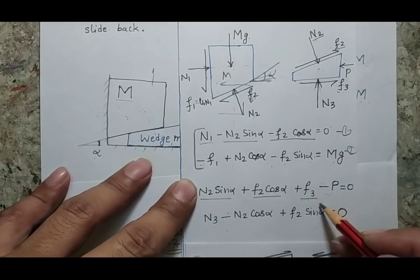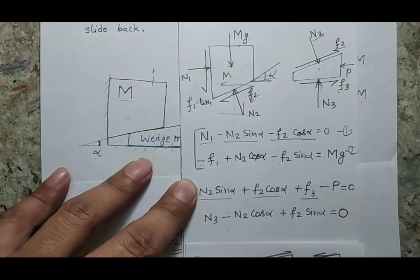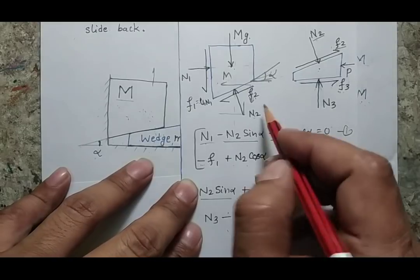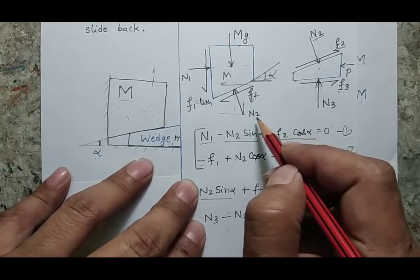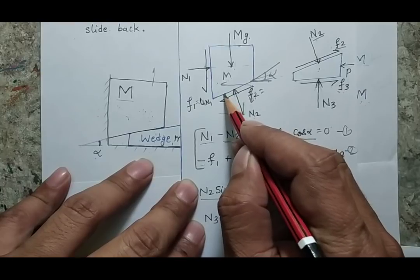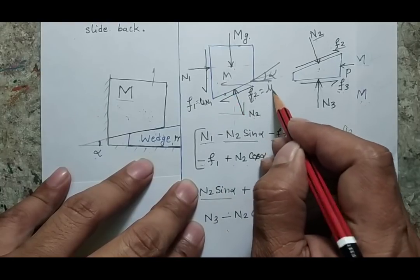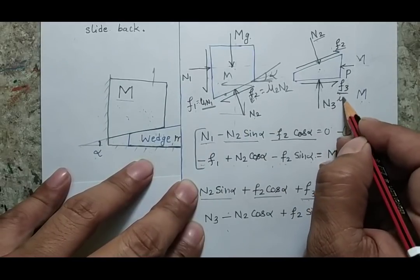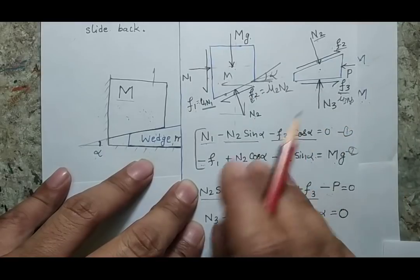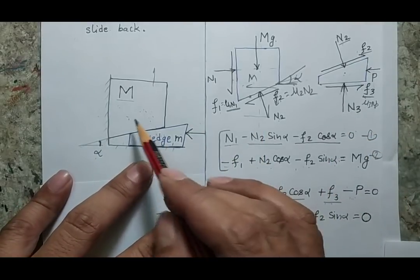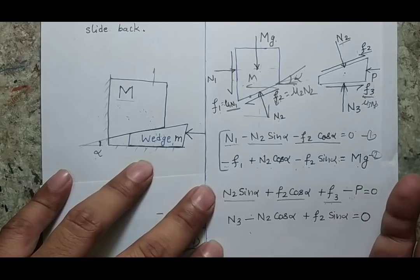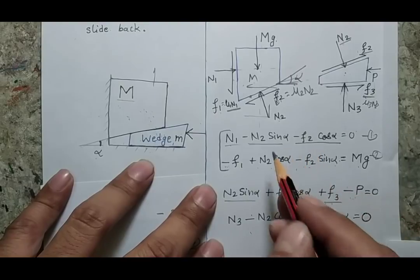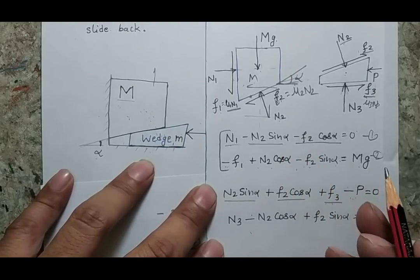Please either remember these equations or practice them so you can write them quickly. The F forces are the friction forces defined as the product of the coefficient of friction and the normal reaction. F2 = mu2 × N2, F1 = mu1 × N1, and F3 = mu3 × N3. In some cases all surfaces have the same friction coefficient, so mu1 = mu2 = mu3 = mu. Otherwise, if friction differs between surfaces, we write mu1 N1, mu2 N2, and mu3 N3 separately.